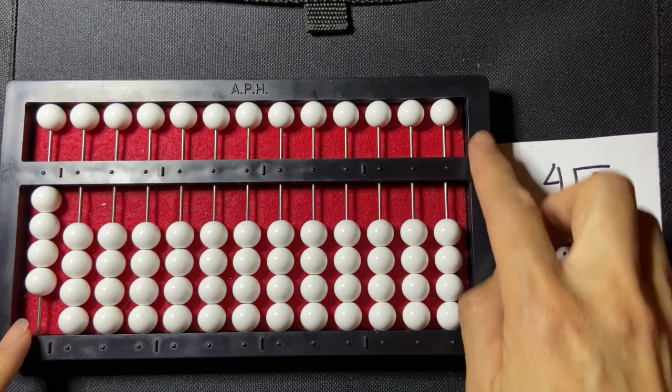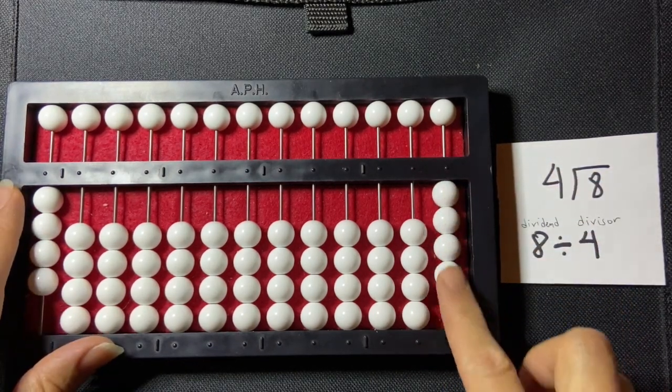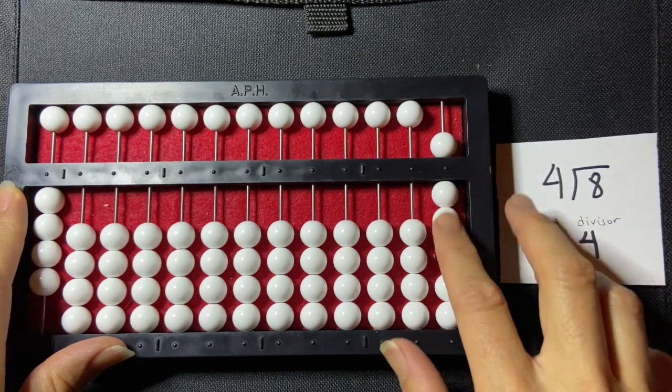I set my dividend in the far right-hand side of my abacus. One, two, three, four, five, six, seven, eight.